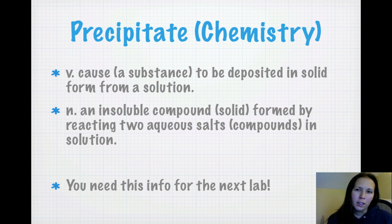Also a precipitate in chemistry can be a verb. It's to cause a substance to be deposited in solid form from a solution. Or as a noun, it's the actual insoluble compound or solid formed by reacting two aqueous salts or compounds in solution. You'll need this information for the next lab.